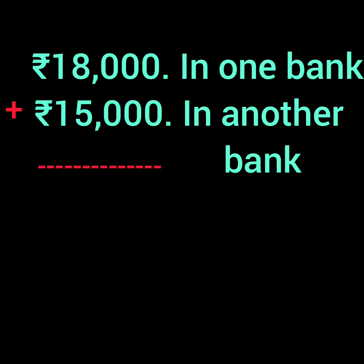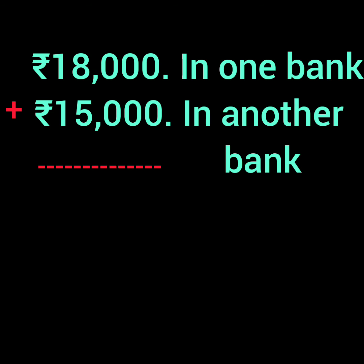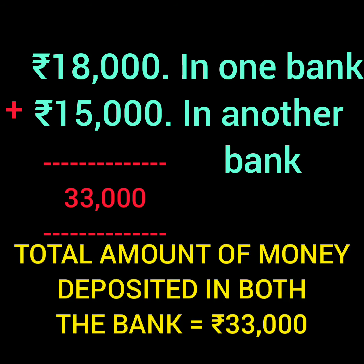When you add 18,000 plus 15,000, the answer comes 33,000. So the total amount of money deposited in the bank is Rs. 33,000.